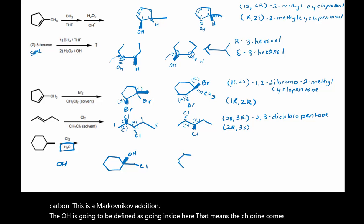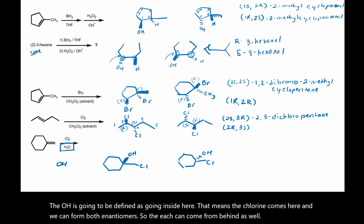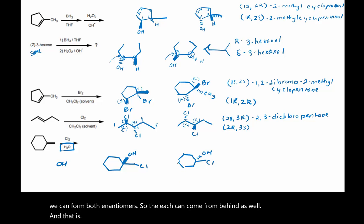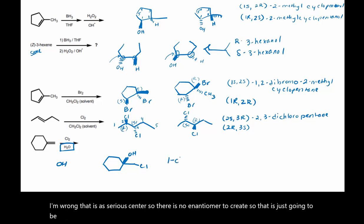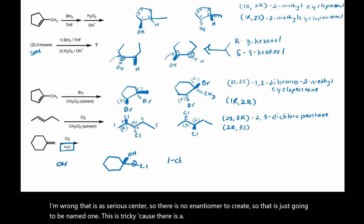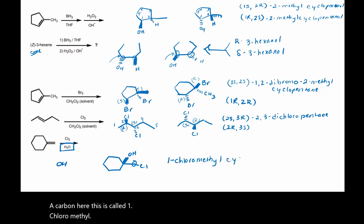So the OH is going to be defined as going inside here. That means the chlorine comes here. We can form both enantiomers — the OH can come from behind as well. However, that is not a stereocenter, so there is no enantiomer to create. That is just going to be named 1-chloromethylcyclohexanol.